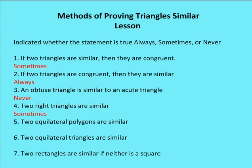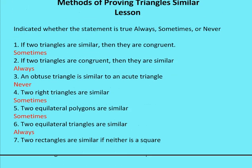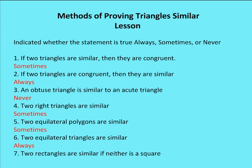Two equilateral polygons are similar — that answer is sometimes. For example, an equilateral triangle and a square are not going to be similar. However, two equilateral triangles are going to be similar — always. In two equilateral triangles, the side lengths are in the same ratio and all angle measures are the same: 60 degrees each. So it's always the case that two equilateral triangles are similar.